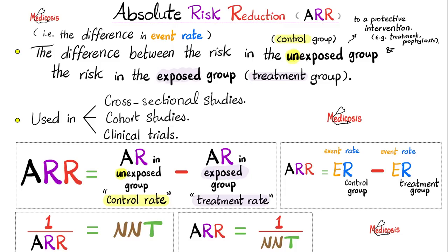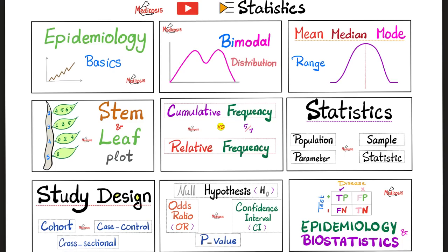The number needed to treat is defined as the number of people that need to be treated with a certain treatment in order for one of them to benefit. We'll continue in the next video — check out my statistics playlist and my biostatistics playlist.